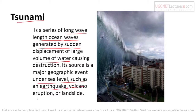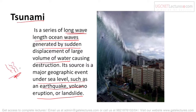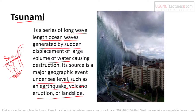Tsunamis are caused by events such as earthquakes, volcanic eruptions, or landslides. When an earthquake or volcanic eruption occurs under the sea, the effect causes water to rise above the sea level, creating very high waves — we call it a tsunami.